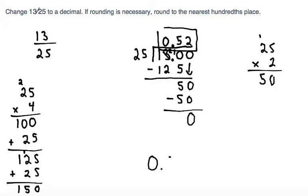Which is 0.52, changing 13 over 25 into a decimal. And since the 2 here is in the hundredths place, and it says if rounding is necessary, round to the hundredths place, we're already in the hundredths place, so we don't need to do any rounding.